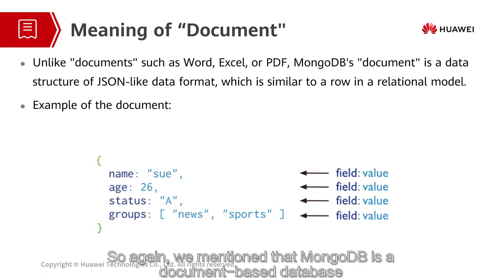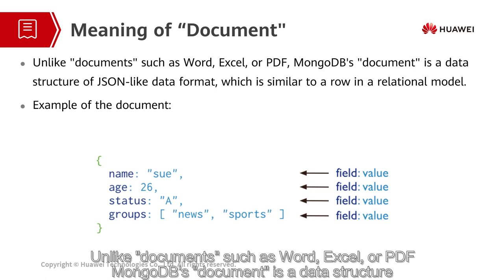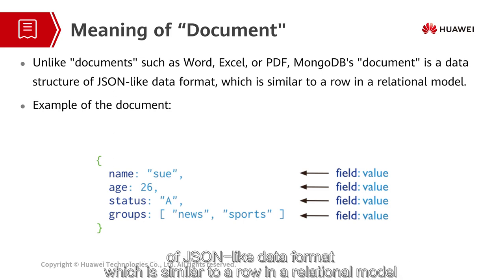MongoDB is a document-based database, but what does "document" mean here? Unlike documents such as Word, Excel, or PDF, MongoDB's document is a data structure of JSON-like data format, which is similar to a row in a relational model.